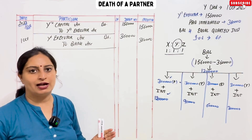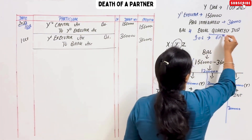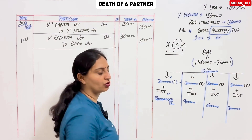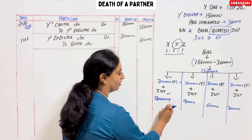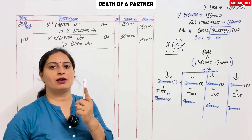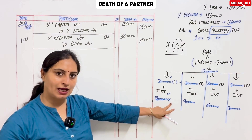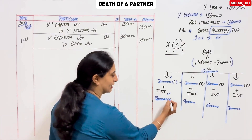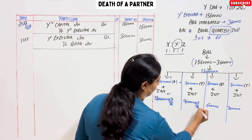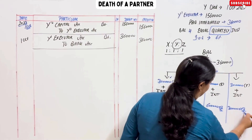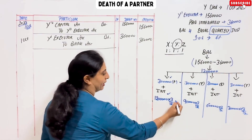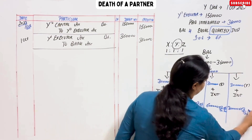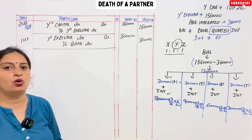If it were half-yearly, it would be 6 months. But quarterly means 4 installments per year, and 1 quarter is 3 months. So the time period is 3 by 12. The rate is 6%. Now I will write the interest calculation one by one.